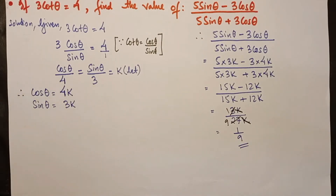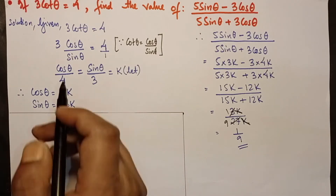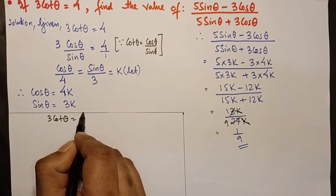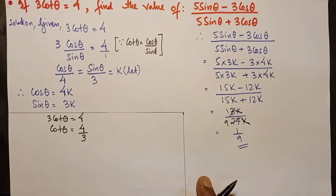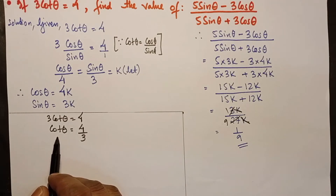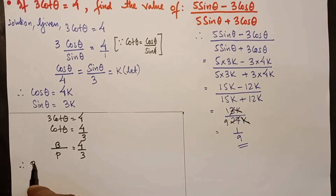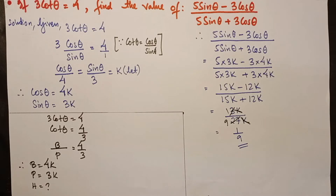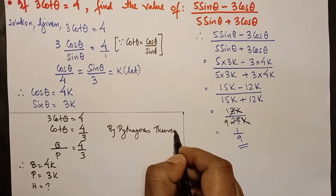You can also try the other method shown in my previous video. Here's a hint: from 3cotθ = 4, we get cotθ = 4/3. Since cotθ is the reciprocal of tanθ, we can write the opposite side (p) = 3k, base (b) = 4k, and hypotenuse (h) is unknown.